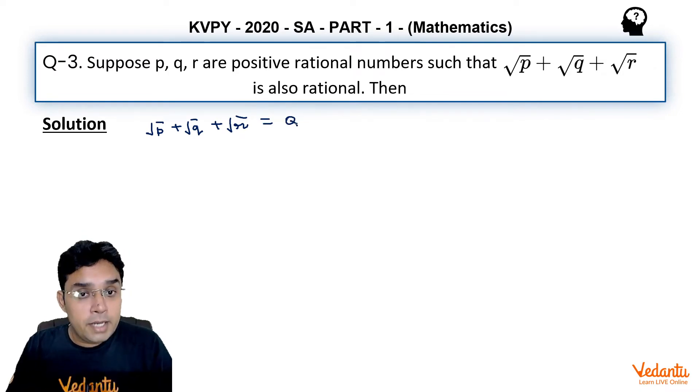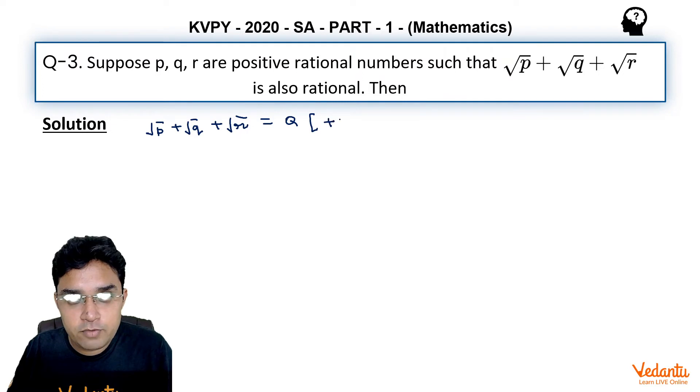Now because √p, √q, √r have to be positive quantities, α should also be a positive number. Now I am putting two terms, √p and √q, on the left-hand side and bringing √r to the other side.